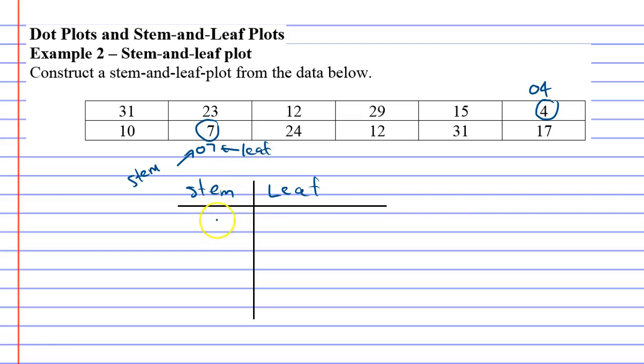So we're going to go stem is zero, and we're going to take the number four and the number seven and we're going to write them both on the leaf.